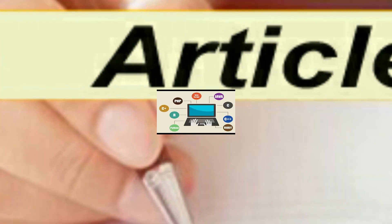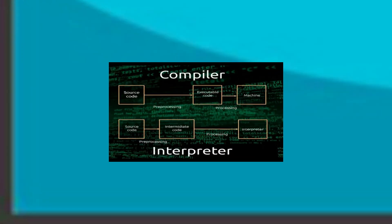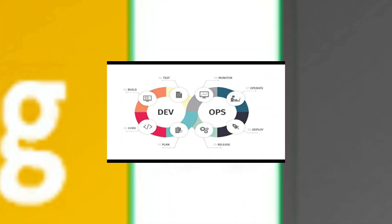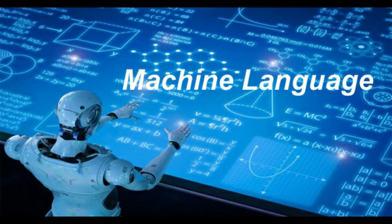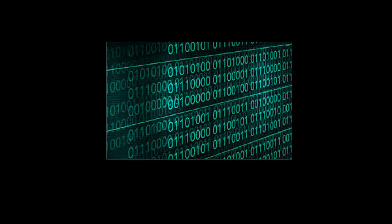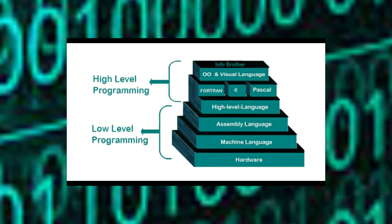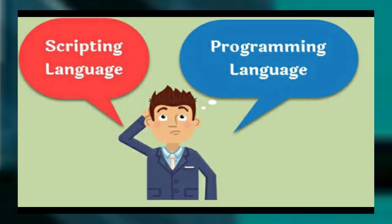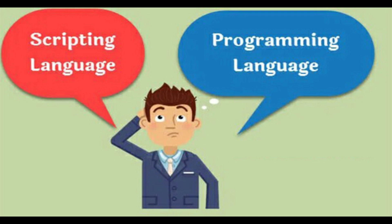After reading this article you will be able to understand scripting languages, the difference between compiler and interpreter, the difference between programming language and scripting language, and whether programming or scripting knowledge is required to learn DevOps. Machine language is the lowest level of programming language and is the only one which a computer can understand. It is not possible to write a program in machine language — what we often call binary code, zeros and ones. This is the reason we use high level programming language, which is then converted into machine language to run on a computer. To understand what a scripting language is, we must understand the difference between programming and scripting language.